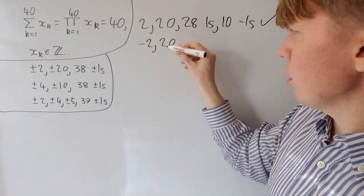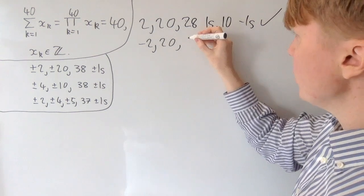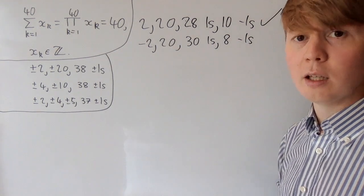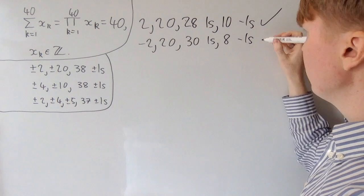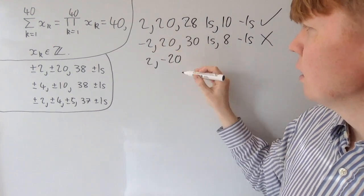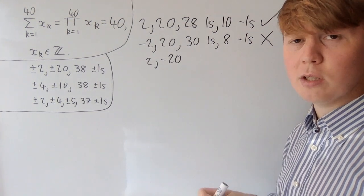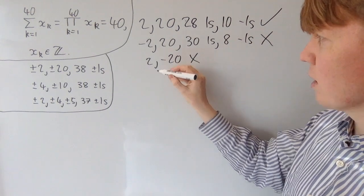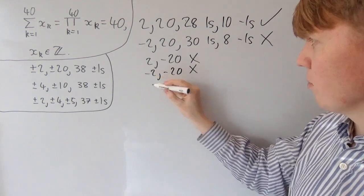For −2 and +20, the contribution is 18, so the 1s must contribute 22. Taking 30 positive 1s and 8 negative 1s achieves this sum, but we now have an odd number of negatives overall, so the product is −40 — no good. For +2 and −20, the contribution is −18, and even taking all 38 remaining 1s as positive only gives a sum of 20, so this doesn't work. Similarly, −2 and −20 can't reach a sum of 40 even with all 1s positive.